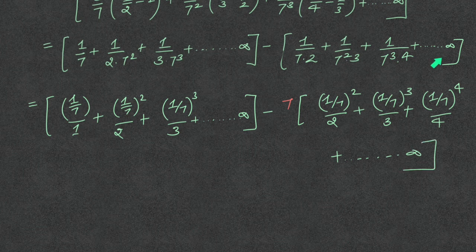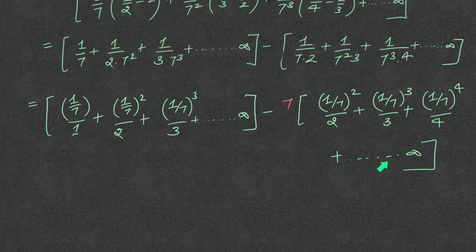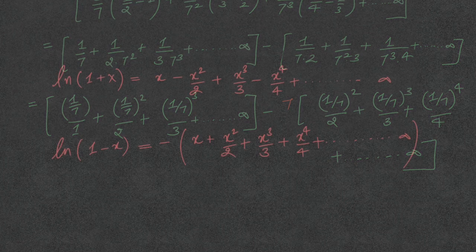In this step, we multiplied and divided by 7, so that's why 1 upon 7 became 1 upon 7 squared, and 1 upon 7 squared becomes 1 upon 7 cubed, and similarly 1 upon 7 cubed becomes 1 upon 7 to the power 4, and this process goes on.